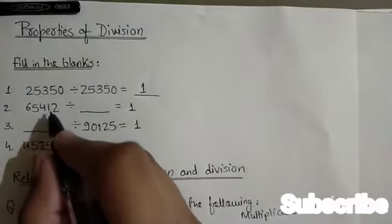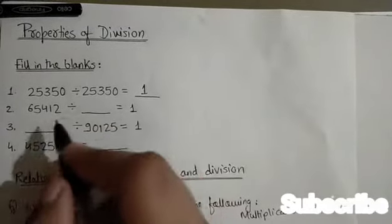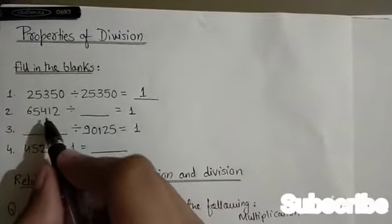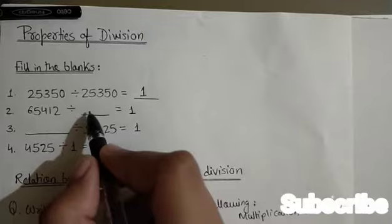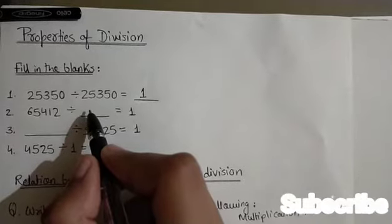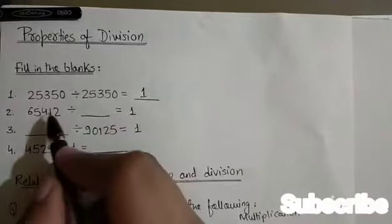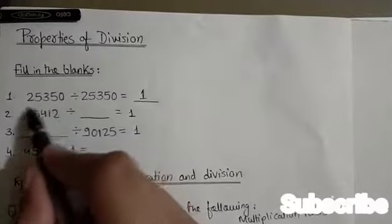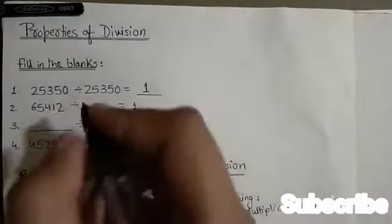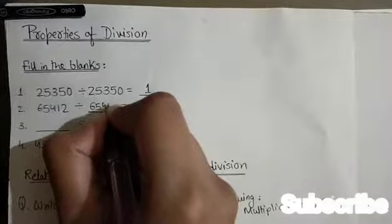65,412 divided by blank equals 1. When we divide a number by itself, the quotient is 1. Here the quotient is 1, so we divide 65,412 by 65,412.